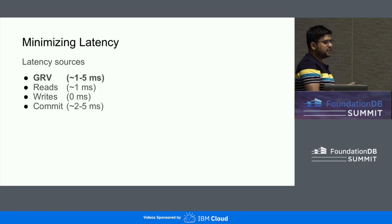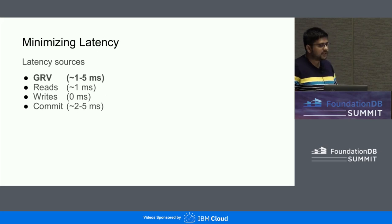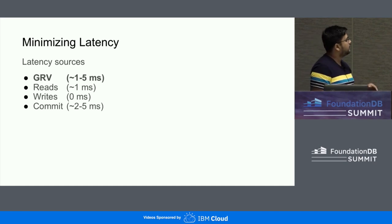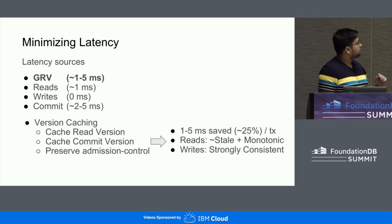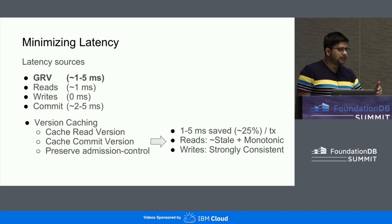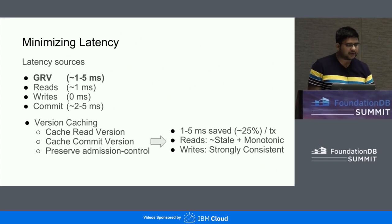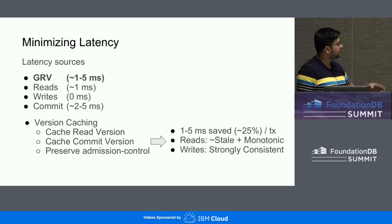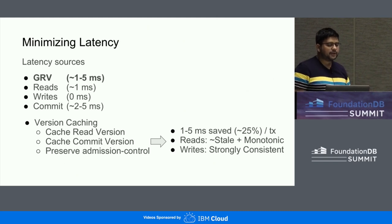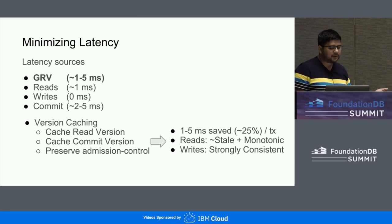The second problem I want to talk about, which is again very generally applicable, is minimizing the latency of transactions. Typically, there are four phases: GRV to get the read version, reads, writes, and then commit. GRV is something that is optional — it can be removed at some cost. Every transaction has a read version and a write version. If we could cache these versions and reuse them, we can eliminate the GRV call. Using this, we are able to save about 25% of our transaction latencies, at the cost that some read-only transactions give you slightly stale but monotonic data.